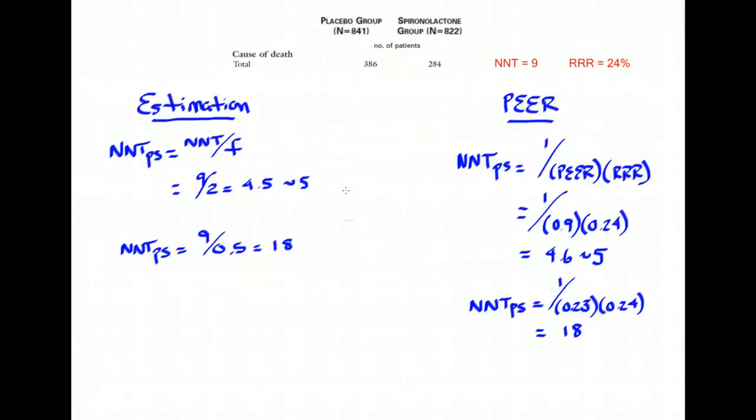So hopefully this patient specific number needed to treat calculations will be something that you'll do so that you can practice a little bit more patient centered care. And it just makes more sense because unless your patient is similar to those in that particular study, you really should think about calculating the patient specific number needed to treat such that you can make better decisions in deciding on whether or not to use a therapy in your individual patient.